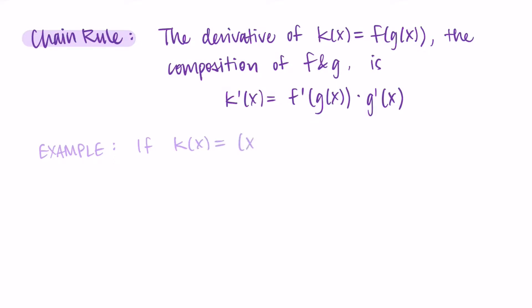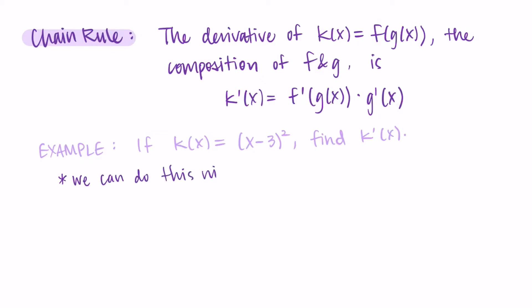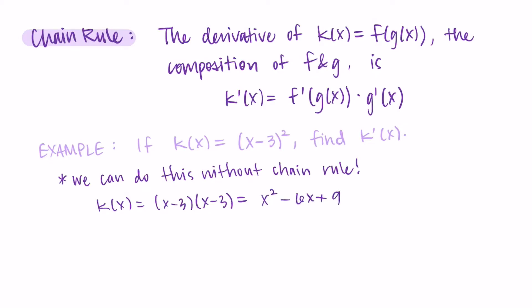Let's apply this to an example. Say k of x equals (x minus 3) quantity squared, and we want to find k prime. Before trying chain rule, I want to show we can do this without it — by distributing x minus 3 times x minus 3 we get x squared minus 6x plus 9. This is just a polynomial, so using the power rule: the derivative of x squared is 2x, the derivative of negative 6x is negative 6, and the derivative of 9 is 0. So k prime equals 2x minus 6.